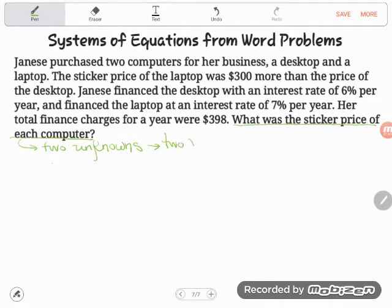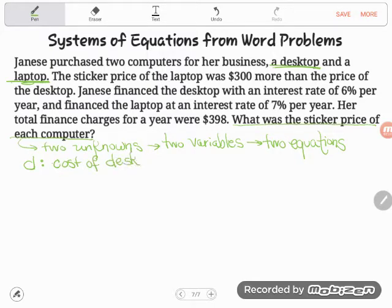So two unknowns, you need two variables. Those are letters, two equations. So let's establish our variables first. Look at what you're finding. It says, what was the sticker price of each computer? Well, I'm finding the sticker price of two computers. What two computers did she get? She purchased two computers for her business, a desktop and a laptop. So how much did the desktop cost? Let's use a letter for that. How about D because of desktop? So from here on out, every time I use a D, it's going to stand for the cost of the desktop. And then I need another variable for my other unknown. The other thing I don't know is the cost of the laptop. How about I use L for the cost of the laptop?